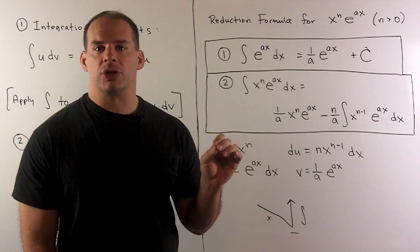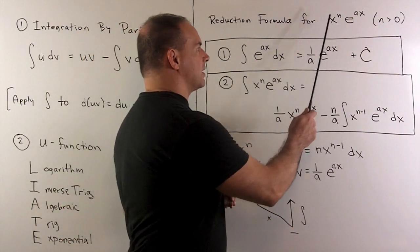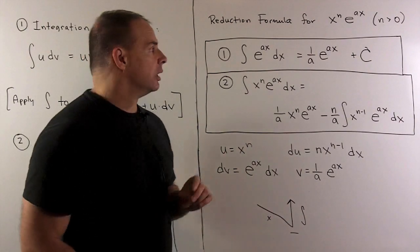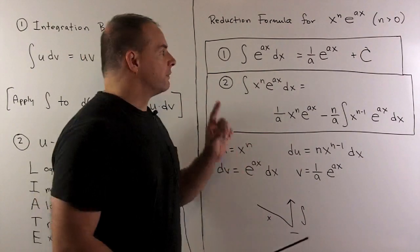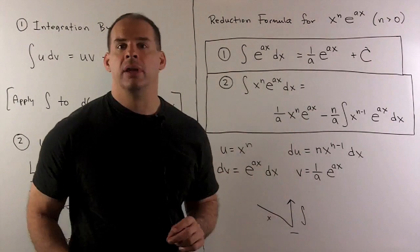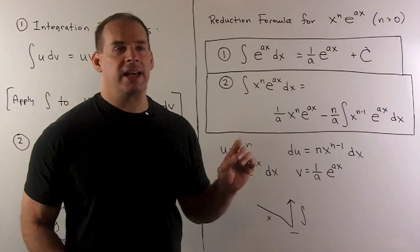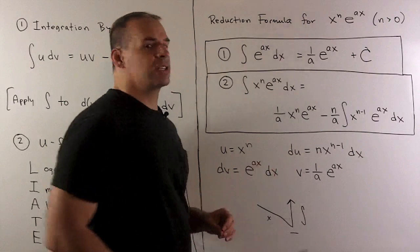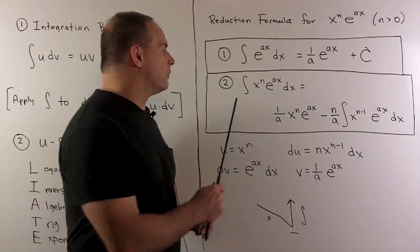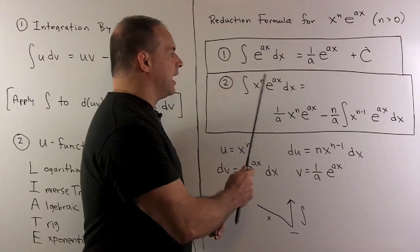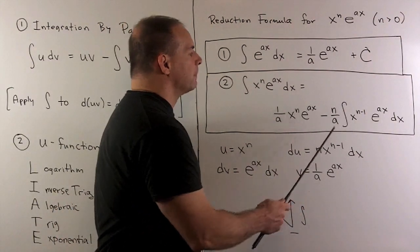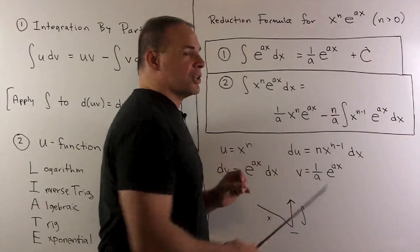Now, we consider the reduction formula where the integrand is of a form, x to the n, e to the ax, where n is a positive integer. We need two pieces of information. The first is our base case. So, this will be when n is equal to zero. The indefinite integral of e to the ax dx is equal to one over a e to the ax plus our constant of integration. Then, we have the reduction formula. Indefinite integral of x to the n e to the ax dx is equal to a function minus indefinite integral with x to the n minus one in the integrand.